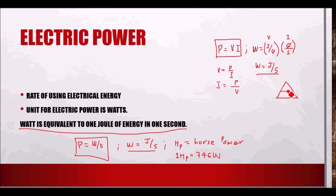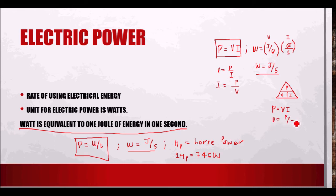The power triangle has P at the top and V and I at the bottom. If looking for P, cover P — I and V are adjacent so P = V × I. If missing V, cover V — P is on top and I is below so V = P/I. If looking for I, cover I — P is on top and V is below so I = P/V.